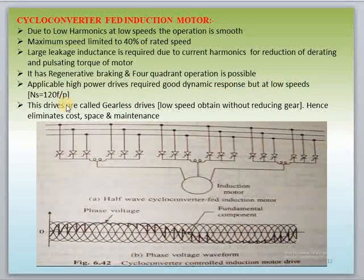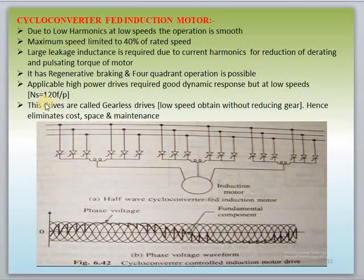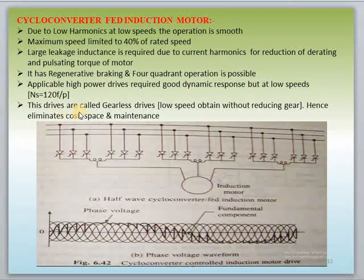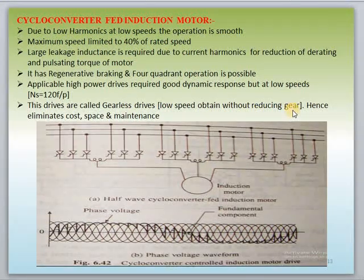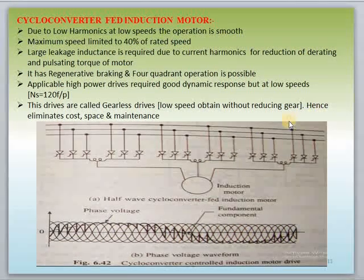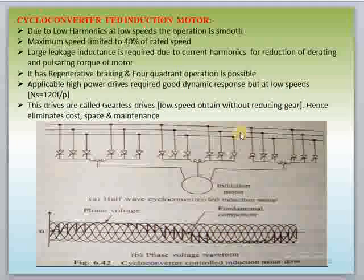Regenerative braking and four-quadrant operation are possible with cyclo-converters. They are applicable for high-power drives requiring good dynamic response but at low speeds — low speeds are achieved by NS = 120f/P, meaning by increasing the pole value you decrease the speed. At low speeds you design for higher number of poles. These drives are called gearless drives because low speeds are obtained without using a gear, thereby eliminating cost, space, and maintenance.